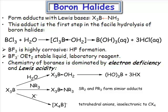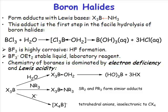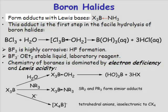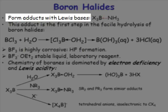Boron halides are definitive Lewis acids. The first chemistry you should always expect when doing chemistry with a boron halide is that it will function as a Lewis acid. So if you're asked for a chemical reaction between a boron halide and a second species, first look at that second species — is it a Lewis base? If it is, the first interaction is always donation of that lone pair of electrons into the vacant orbital on boron, forming a Lewis acid-Lewis base adduct.